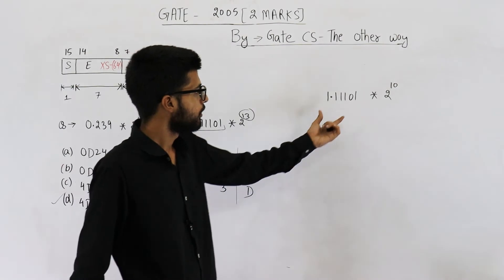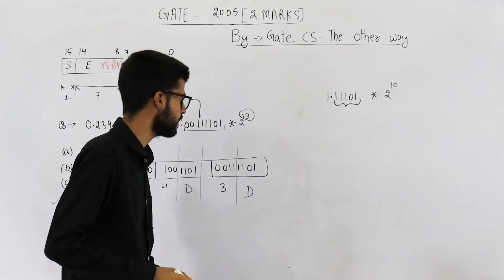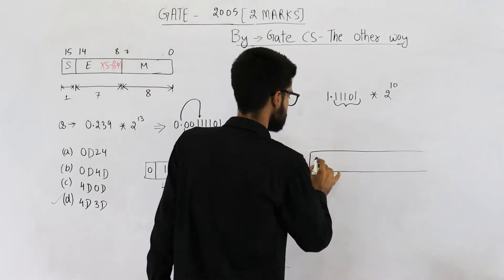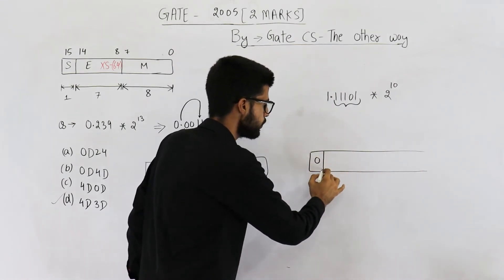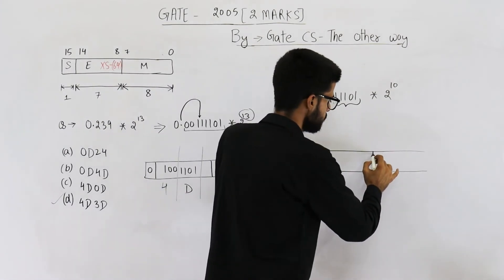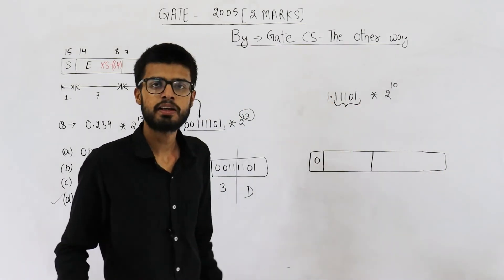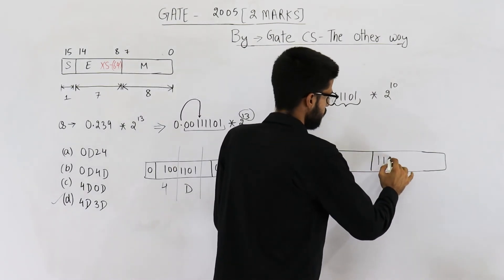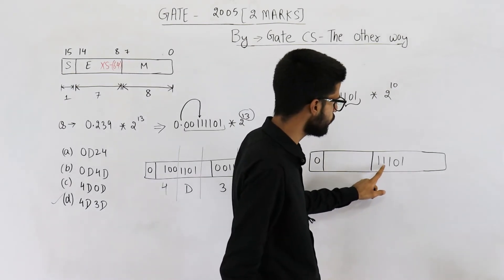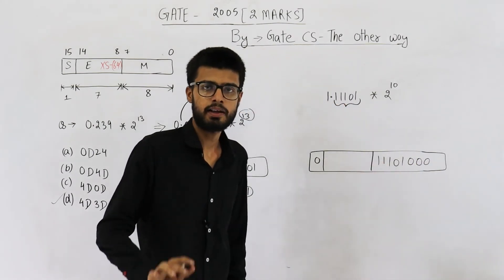Now see, we have found out what is mantissa. Mantissa is this. The number is positive. That means sign bit is zero. Next, we need to save exponent in 7 bits. So I am leaving 7 bits. Let us first save mantissa in 8 bits. So this has to be saved in 8 bits. 1, 1, 1, 1, 0, 1. Now just fill all the bits as zeros. 1, 2, 3, 4, 5. That means we need 3 zeros. This is mantissa in 8 bits.